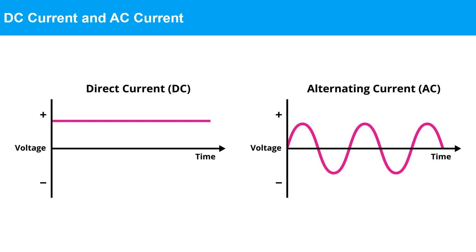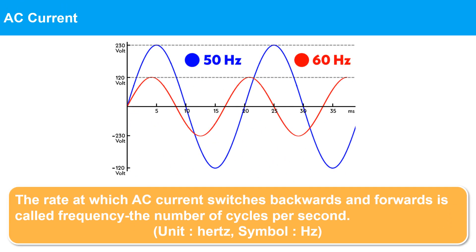DC, on the other hand, flows in one direction only, and it is commonly used for powering electronic devices such as computers, mobile phones, and electric vehicles. It is also used for specialized industrial applications such as welding and electroplating, as well as for renewable energy sources such as solar panels and wind turbines. The rate at which AC current switches backwards and forwards is called frequency — the number of cycles per second — with unit Hertz.